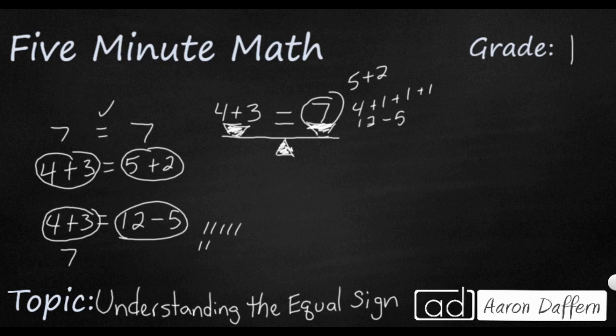...6, 7, 8, 9, 10, 11, 12. I'm going to take away 5, so that's going to leave 1, 2, 3, 4, 5, 6, 7. That is 7. So 7 equals 7.